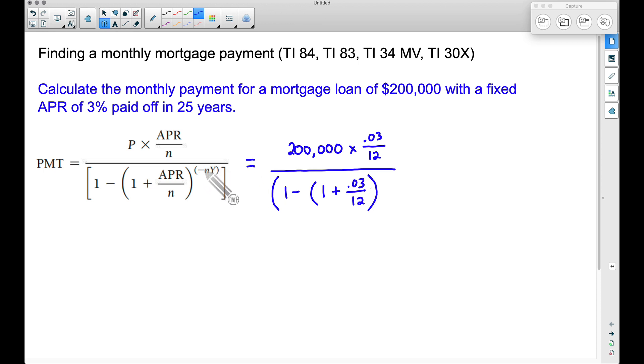For this exponent, we want to take negative N times Y. Depending on what calculator you have, you may or may not need to use these parentheses. We have negative 12 because that's negative N, the number of payments per year, times the number of years, 25 years. That's the length of our loan that we have to pay off. Close up the exponent and that square bracket - I'm using an extra parentheses.